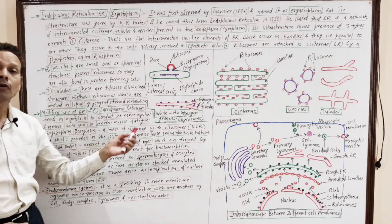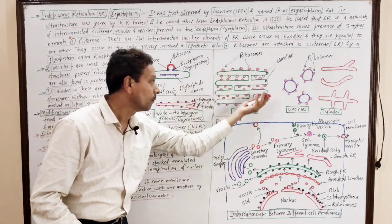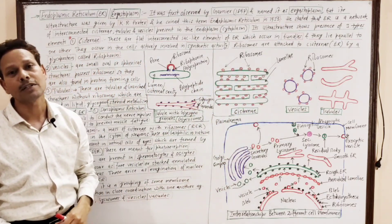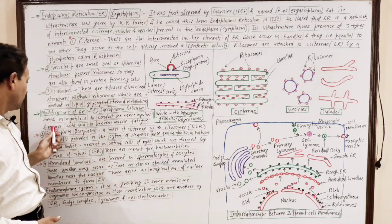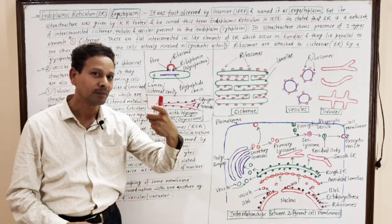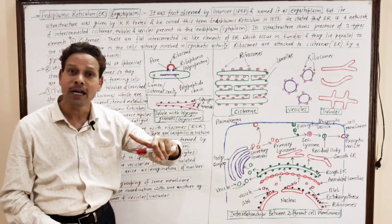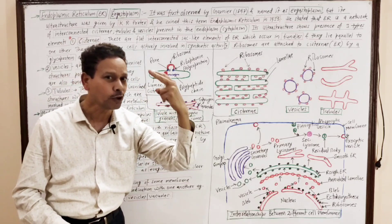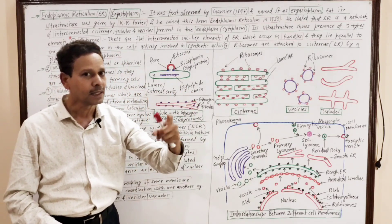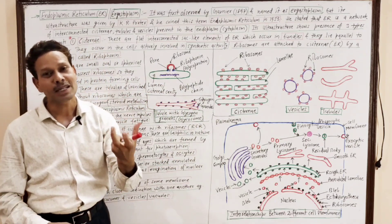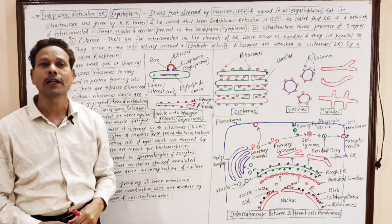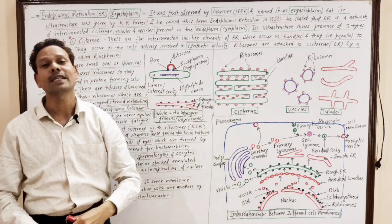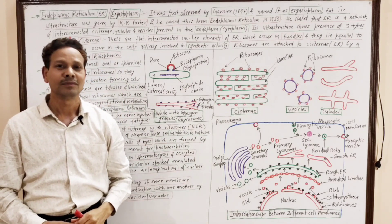The sarcoplasmic reticulum removes and expels the lactic acid present in our muscles. So the sarcoplasmic reticulum in muscle cells removes lactic acid to prevent muscle fatigue. The second modification is ergastoplasm or basoplasm — a mass of cisterna first observed by Garnier in 1897. These ergastoplasm granules are basophilic in nature due to the presence of RNA molecules.